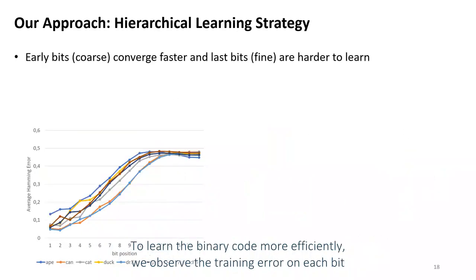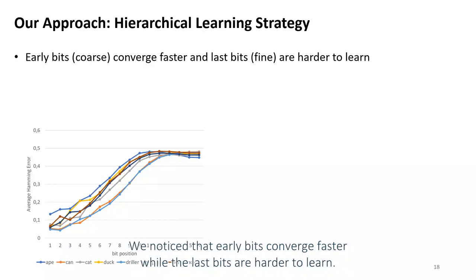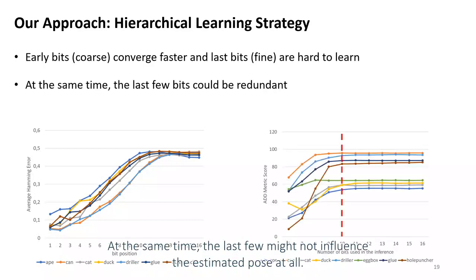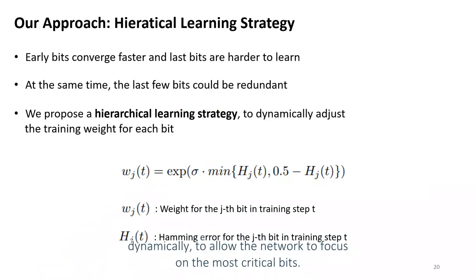To learn the binary code more efficiently, we observe the training error on each bit and the influence of the code length on the estimated object pose. We noticed that early bits converge faster while the later bits are hard to learn. At the same time, the last few bits might not influence the estimated pose at all. So, we propose a hierarchical training strategy to adjust the training weights for each bit dynamically, allowing the network to focus on the most critical bits.